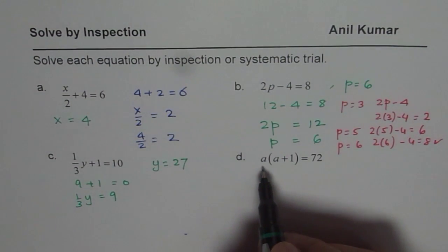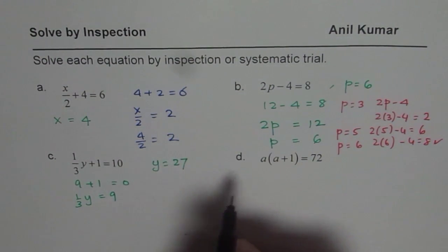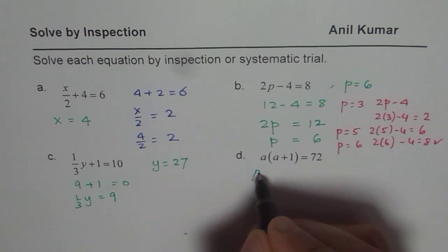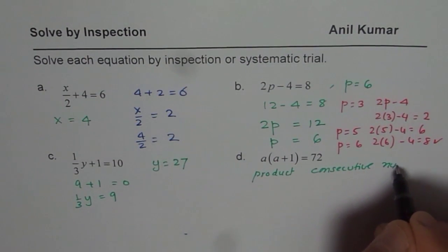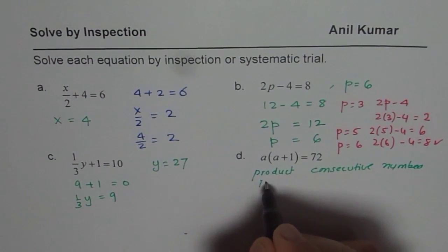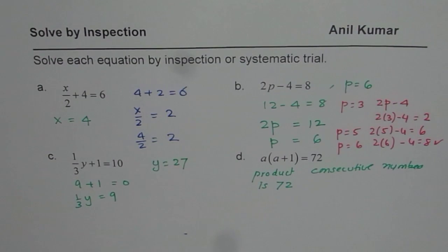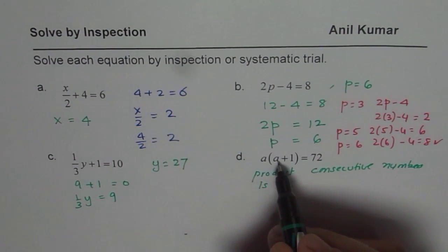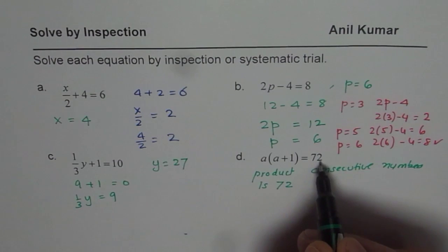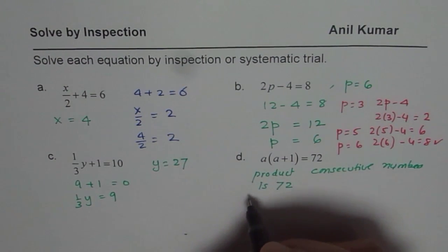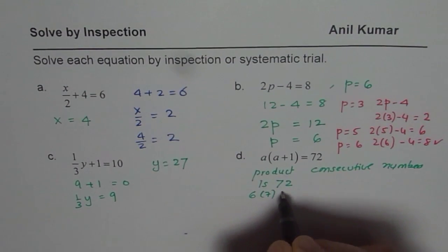Now, let's do the last one here, which is product of a and a plus 1 is 72. Now, it also means that product of consecutive numbers, that means the numbers which come together is 72, numbers like 3 and 4. So if a is 3, then 3 plus 1 is 4. 5, 5 plus 1 is 6. So we are looking for consecutive numbers whose product should be 72. So if I can try, so if I say 6 times 7, well, 6 times 7 is 42. How about 8 times 9?